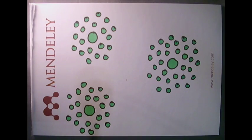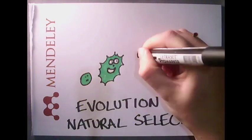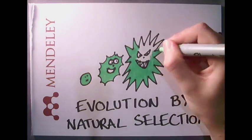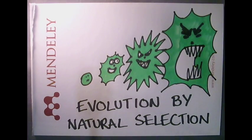The bacteria that survive will keep growing and dividing. This is real-life evolution by the process of natural selection. These stronger bugs can then keep evolving, collecting more mutations and leading to even stronger, more drug-resistant bacteria.